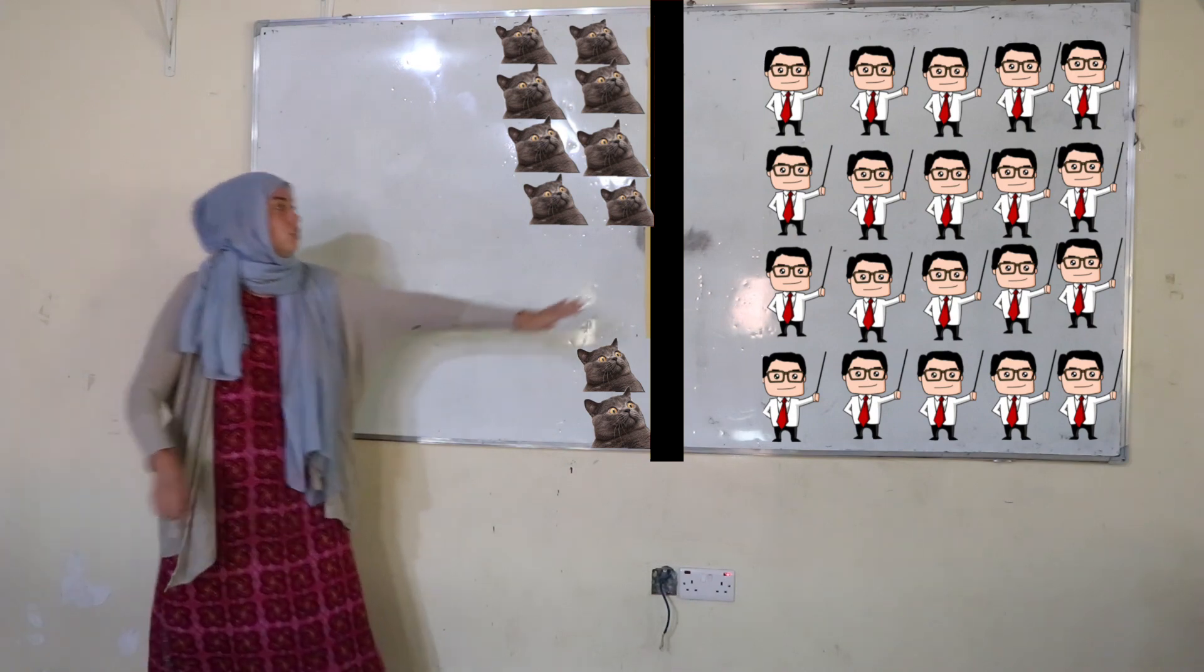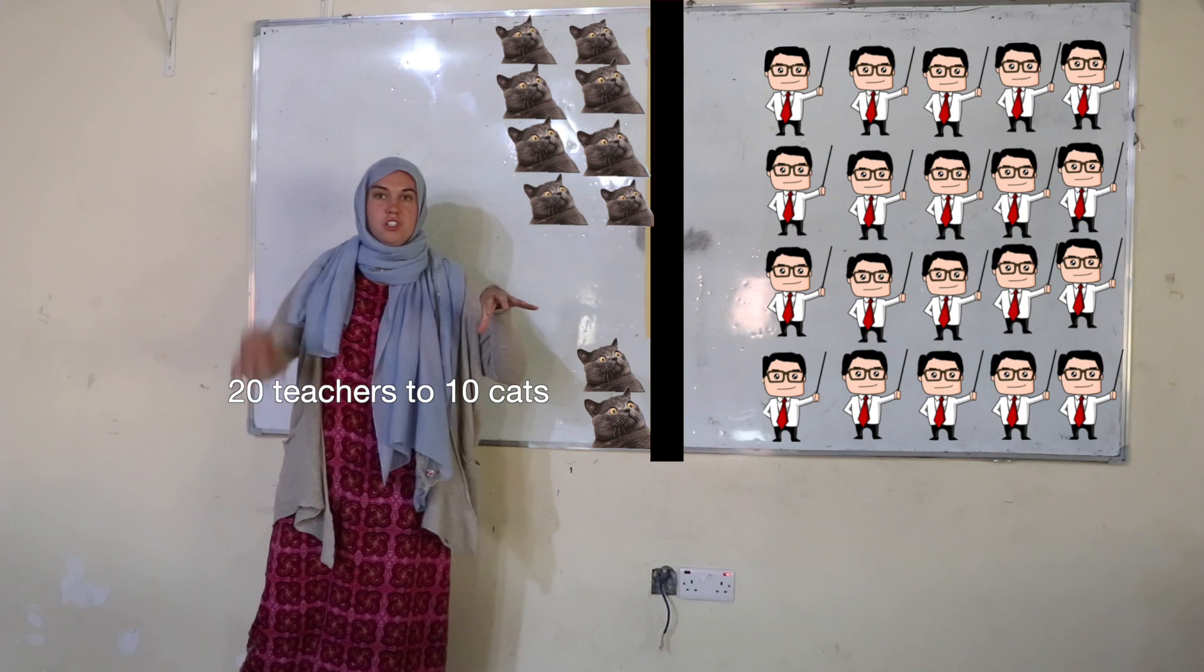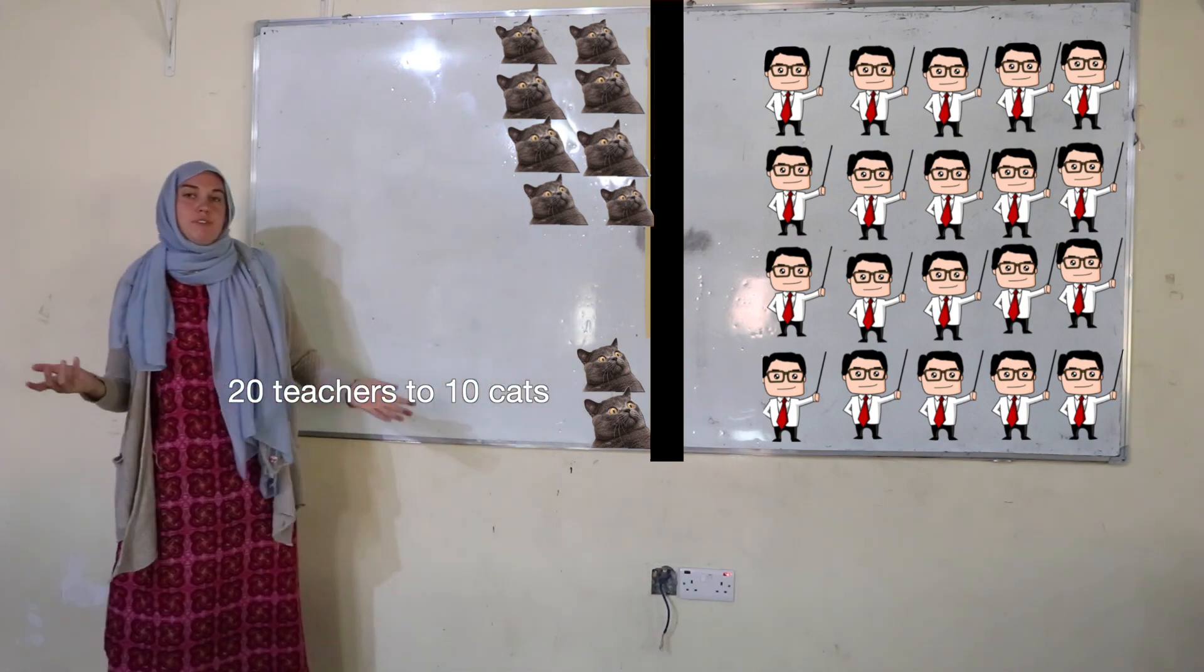You could say there are 20 teachers to 10 cats. There is a ratio of 20 teachers to 10 cats. Let's simplify it.